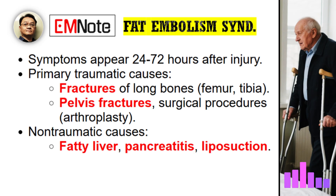So fractures and specific orthopedic surgeries — are there other traumatic causes, maybe less common ones? Yes. While less frequent, things like massive soft tissue damage can release fat, crush injuries too, even prolonged CPR surprisingly, severe burns especially if they cover more than 50% of the body's surface area, bone marrow transplantation, liposuction, even median sternotomy — the incision for some heart surgeries. They're all potential, though less common, triggers. Anything that disrupts tissue with fat or bone marrow is a potential risk.